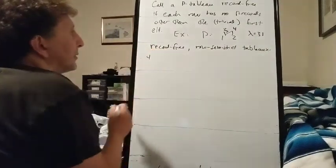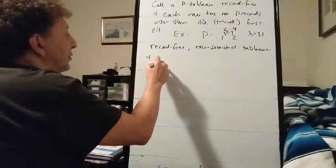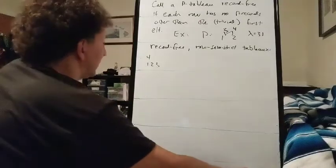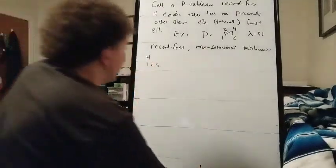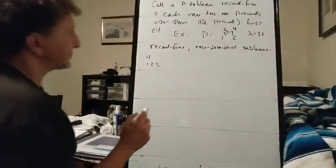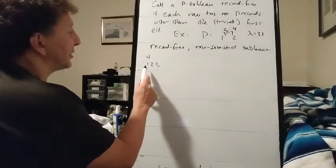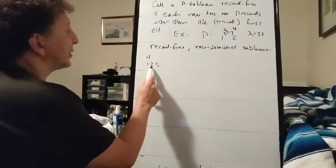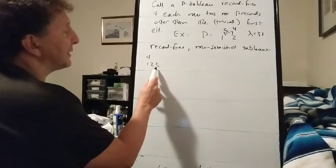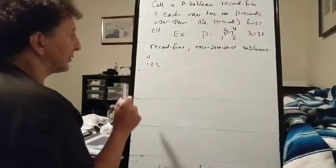If we have 4 in the second row, then 1, 2, 3 have to be somewhere in the first row in some order. Let's see if this works. This is certainly row semi-strict. 2 is not greater than 1. 3 is not greater than everything we've seen so far, so that works.